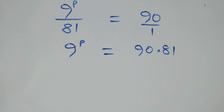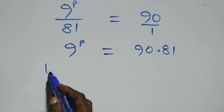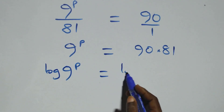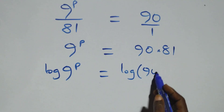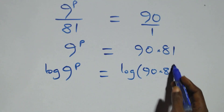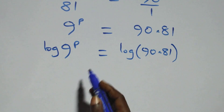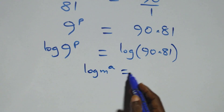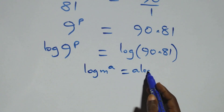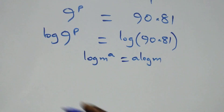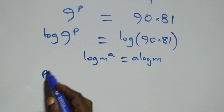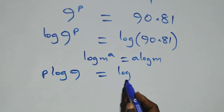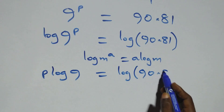The next step we take the log on both sides. We have log of 9 raised to power p equals to log of 90 times 81. Here we apply the power rule of logarithm: log n raised to power a is the same thing as a times log n.